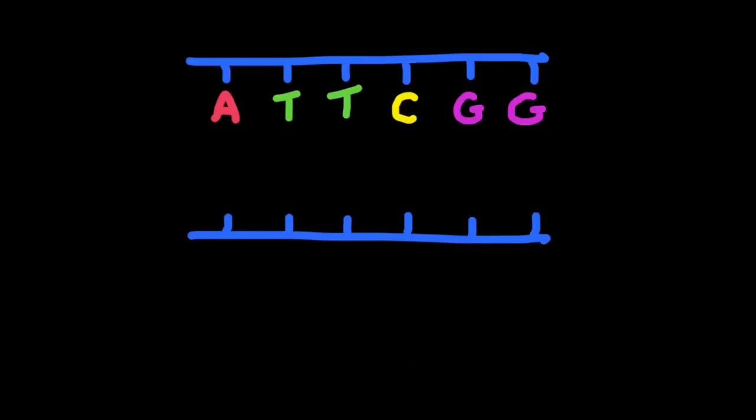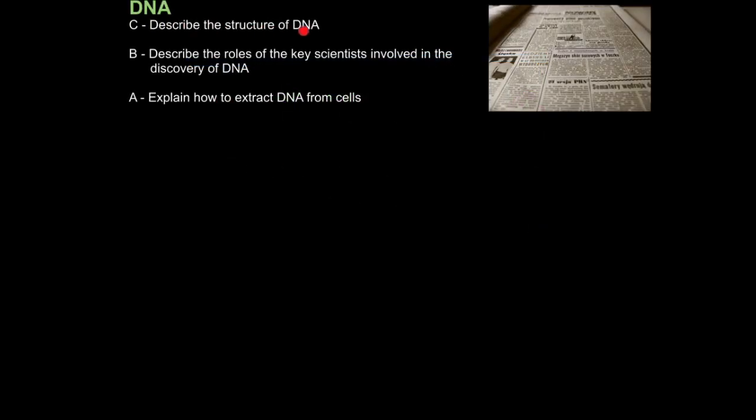The other way they may assess you in an exam is by giving you a strand of DNA for which you must find the complementary sequence of. If you understand specific base pairing, it's really easy. A pairs with T, T pairs with A, C pairs with G, and G pairs with C. That's easy marks. So that's how you describe the structure of DNA.